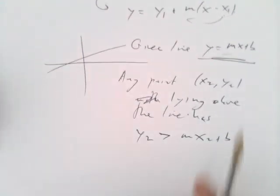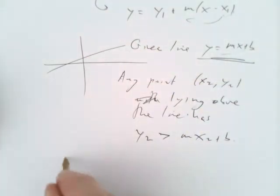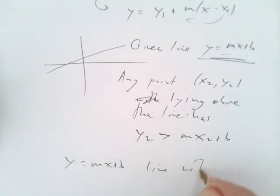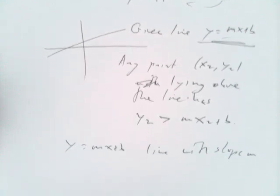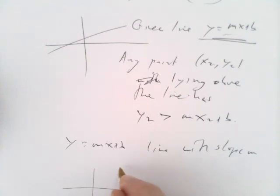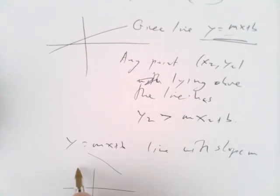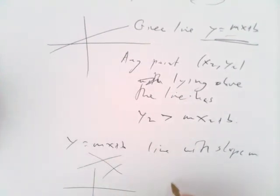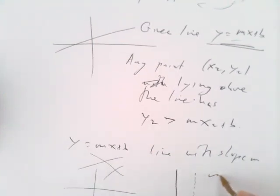Now there's one kind of line that doesn't have this form. This is the form y equals mx plus b, and that's a line with slope m, some finite value of slope measuring how fast it goes up, or if negative, it goes down. But there are lines that don't have that form because they go straight up and down, vertical lines.